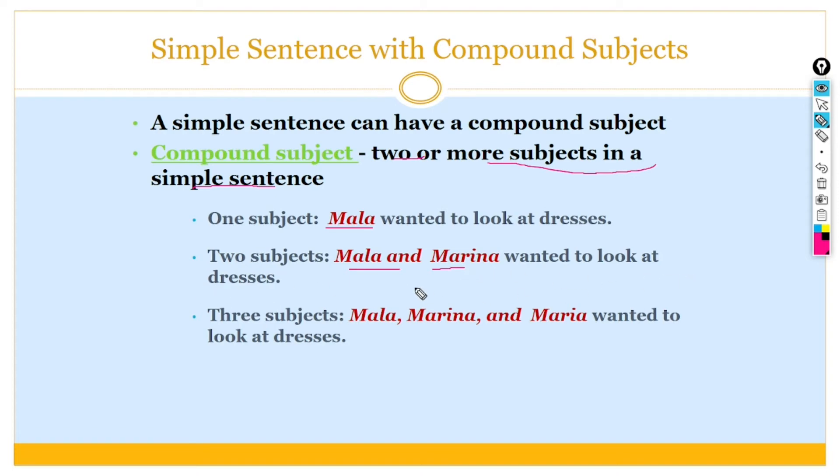Mala wanted to look at the dress. In this sentence there are three subjects. So if we have more than one subject, that is called the compound subject. So Mala and Marina are compound subjects. Similarly three, Mala, Marina, and Maria, is the compound subject in this sentence.